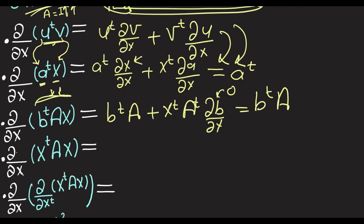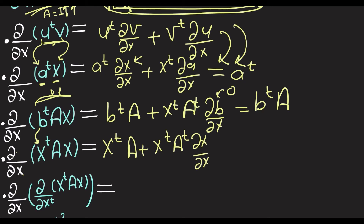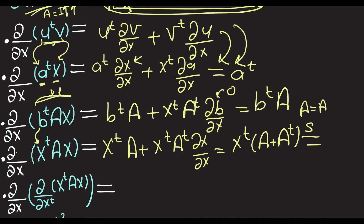For ∂/∂x of x-transpose Ax, b is now x, so we'll have x-transpose A plus x-transpose A-transpose times ∂x/∂x, which gives x-transpose times (A plus A-transpose). If A is symmetric, that implies A equals A-transpose, and this will give us 2x-transpose A.